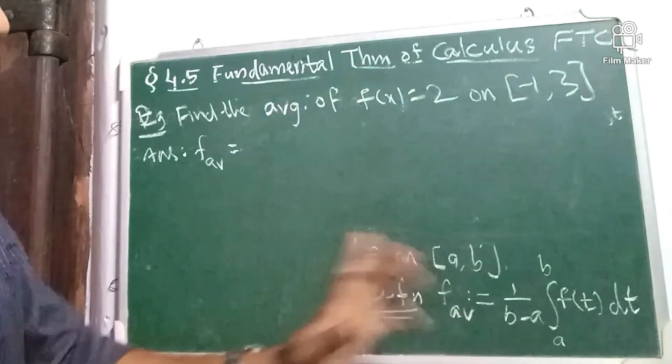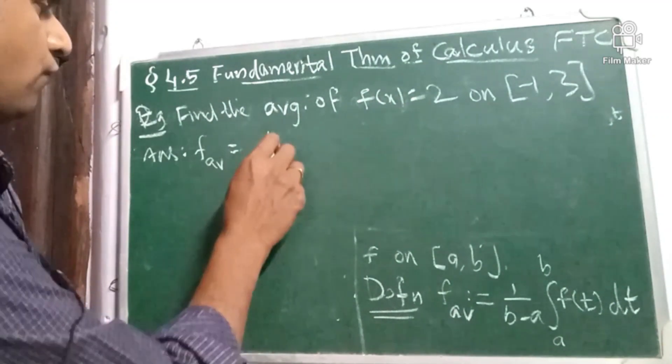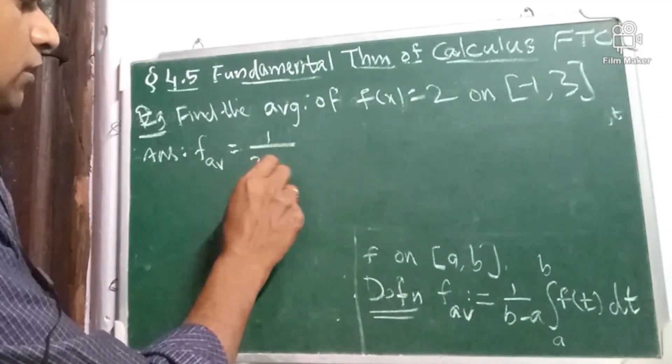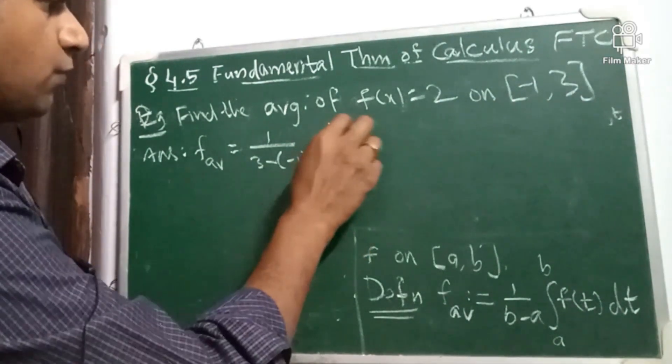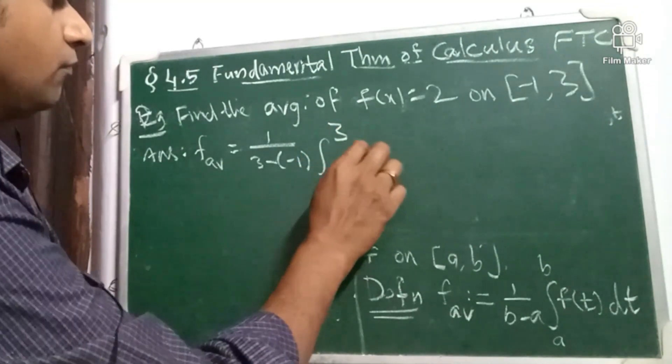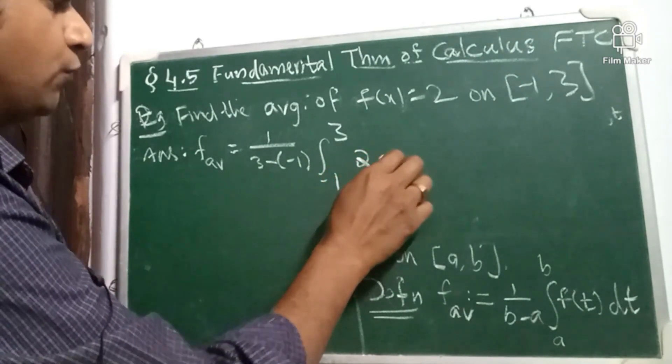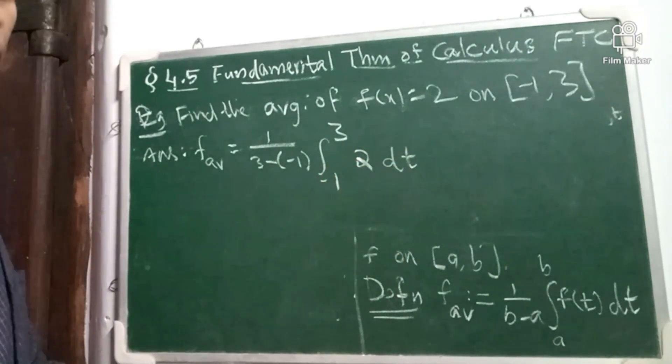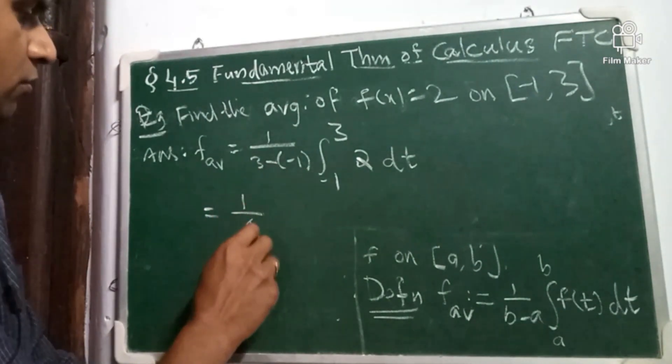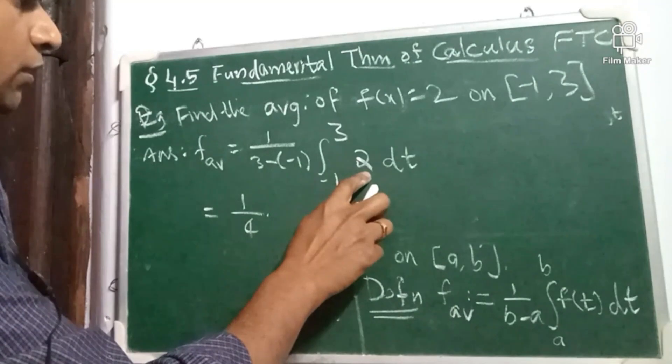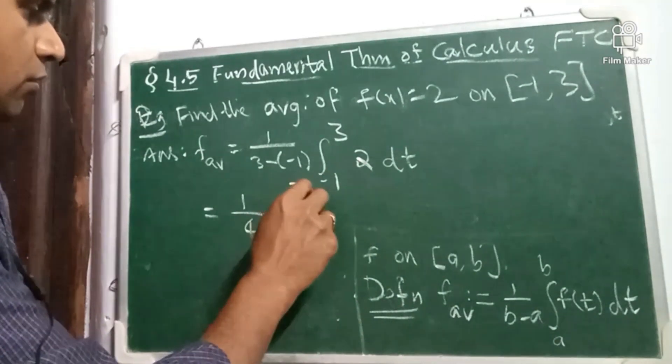Let us work out using this formula. So f average is equal to 1 divided by b minus a, 3 minus minus 1, b minus a, integral -1 to 3, f(t) dt or f(x) dx. So 2 dt. So this is equal to 1 divided by 3 plus 1, 4 into 2 times integral -1 to 3 dt.